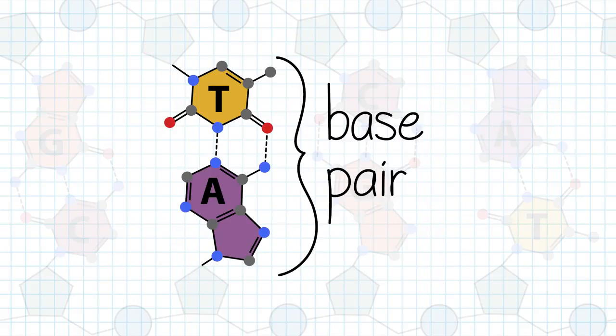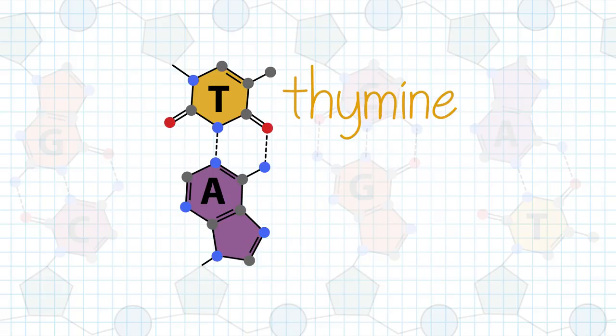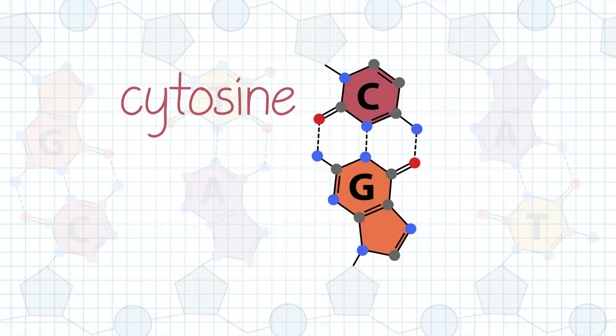The hydrogen bonding contributes to the specificity of base pairing. Thymine preferentially pairs with adenine through two hydrogen bonds, and cytosine preferentially pairs with guanine through three hydrogen bonds.